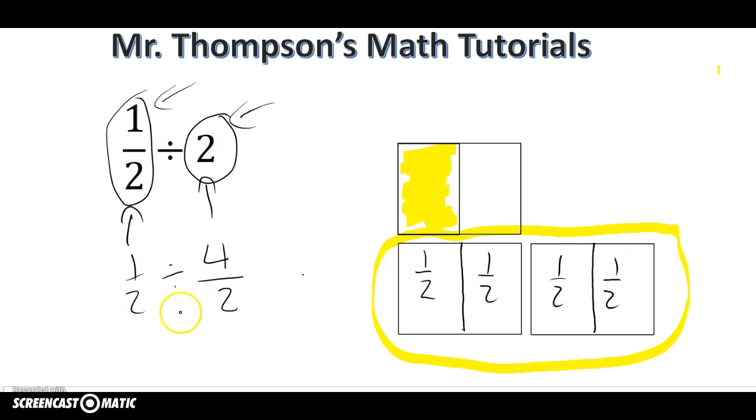And I'm still asking the same question: How many groups of four-halves are in one-half? There's not a full group, but there's a part of a group. My full group is four of these one-halves, so it's four, and my group that I have is one. So I can see that one-half divided by two is actually equal to one-fourth.